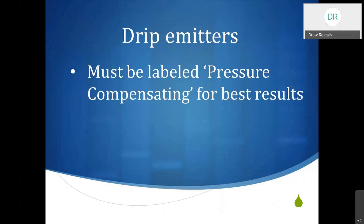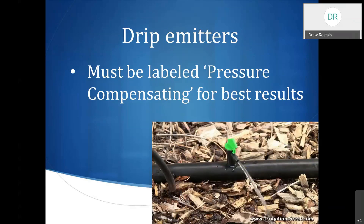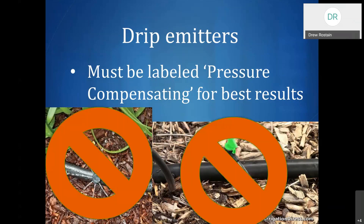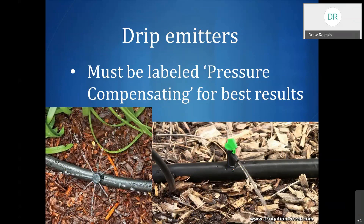One thing to keep in mind: if you're trying to figure out if you have the right drip emitters, look to see if they're labeled pressure compensating or PC for the best results. The reason this is important is that the stamped flow rate in gallons per hour will be the actual flow rate those emitters are putting out. If you have adjustable or non-pressure-compensating emitters, I would recommend swapping them. Non-PC emitters do not compensate for changes in pressure, so the area closest to the water source gets more water and the area furthest gets less — making it very hard to manage and get the right amount of water down.